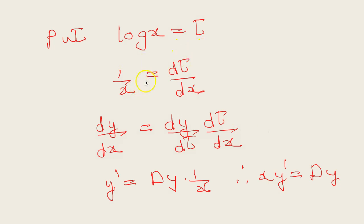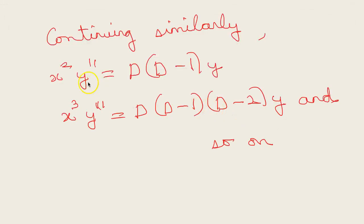The method is the same: we put log x = t. Taking the derivative with respect to x, 1/x = dt/dx. Using the chain rule, dy/dx = dy/dt × dt/dx, so y' = Dy × (1/x). Cross multiplying gives xy' = Dy. Continuing similarly, x²y'' = D(D−1)y, x³y''' = D(D−1)(D−2)y, and so on.